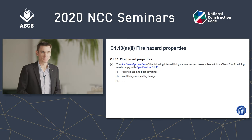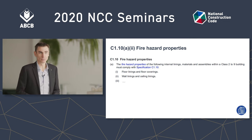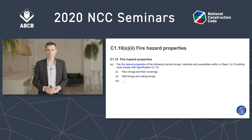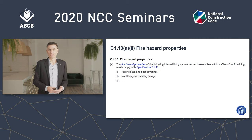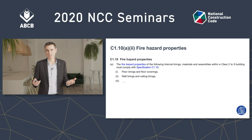This answer may seem obvious, but it's likely this question comes up on account of C110, which is about fire hazard properties. C110 makes requirements of certain internal building elements, including wall linings, and that includes the internal lining of an external wall. So it has been suggested that C19 doesn't apply because C110 applies instead. But that's not the case — C19 applies, and C110 applies as well.